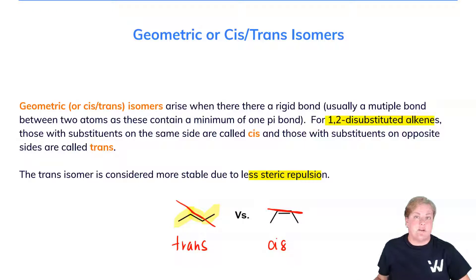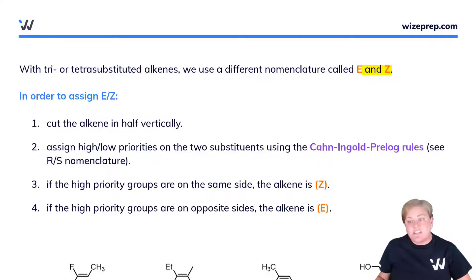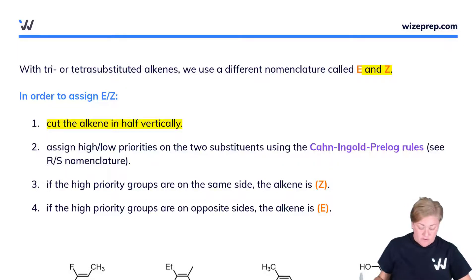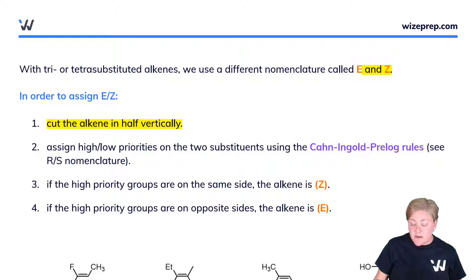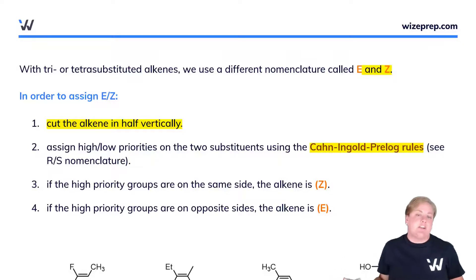But what happens when we have more decorations? For that, we need to introduce another concept of nomenclature. With tri- and tetrasubstituted alkenes, we use a different nomenclature called E and Z. Fortunately, this is not all that complicated, and you get to pull from a lot of content that you already know. There's a series of steps you follow. The first thing you'll do is cut the alkene in half vertically, then assign high and low priorities on either side of that cut using the Cahn-Ingold-Prelog rules. If these rules sound unfamiliar, you will see this nomenclature in the R and S jargon section — so head there to check out the rules.